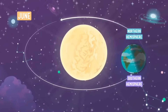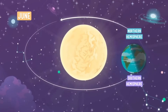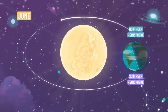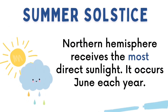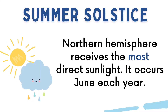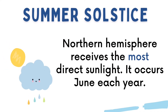The start of the season in hemispheres is distinguished by solstices and equinoxes. We are going to begin with the two solstices. Let us take a look at the position of the Earth during summer solstice. In summer solstice, the Northern Hemisphere receives the most direct sunlight. It occurs in June each year. The Southern Hemisphere experiences the winter solstice during that time. The daytime is longer than nighttime during this period.